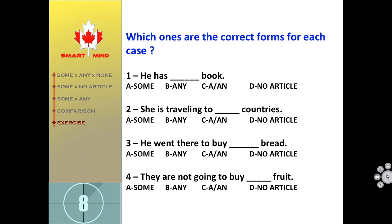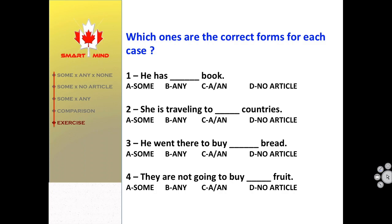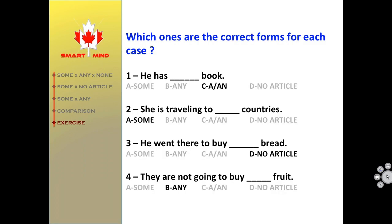Which are the correct forms for each case? One: 'He has ___ book.' Two: 'She is traveling to ___ countries.' Three: 'He went there to buy ___ bread.' Four: 'They are not going to buy ___ fruit.' The answers are: One — 'He has a book.' Two — 'She is traveling to some countries.' Three — 'He went there to buy bread.' (no article) Four — 'They are not going to buy any fruit.'